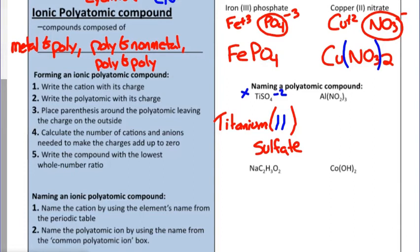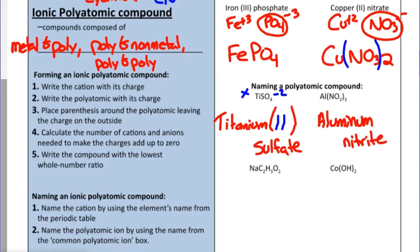For Al(NO2)3: the parentheses are a dead giveaway that a polyatomic ion is involved. Aluminum, being in group three, always has a plus three charge, so this is not a transition metal — we write its full name without Roman numerals. The polyatomic ions already come with their own suffix, so we just need to identify the name for NO2, which is nitrite. This is the formula for aluminum nitrite.